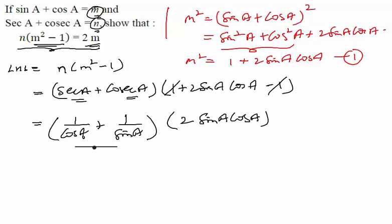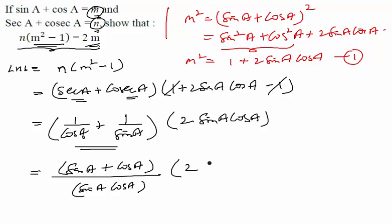If you take LCM in the first bracket, what will happen? You will get (sin a + cos a) upon sin a cos a. This is the result after LCM and you also have multiplication of 2 sin a cos a.